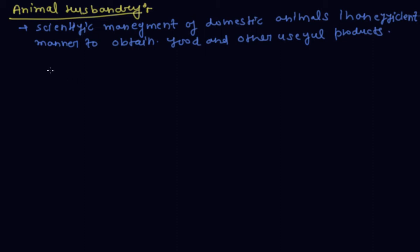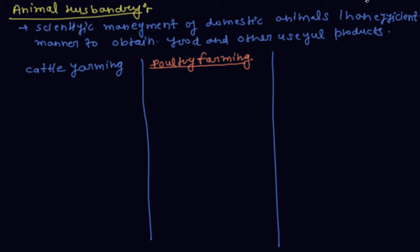The first is cattle farming. Second is poultry farming. Third is fish production, and the fourth is beekeeping.